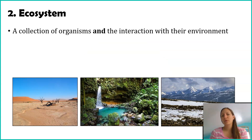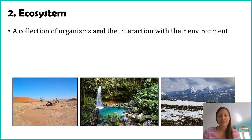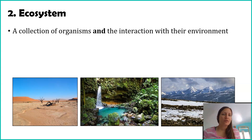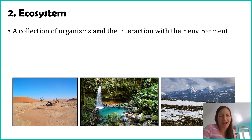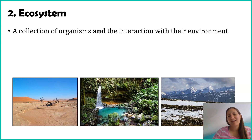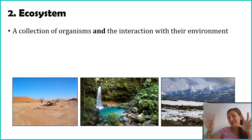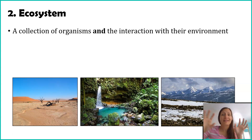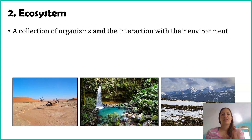The next level down is the ecosystem. You've probably heard and used the term ecosystem before, but let's talk about what it actually entails. Ecosystems have two major components: the collection of organisms — the living stuff — and their interaction with the environment. When we say the environment we mean the non-living stuff: snow, nutrients, sunlight. You may have learned about biomes in grade school — that's what we mean by different environments.